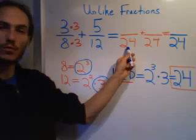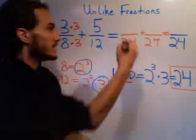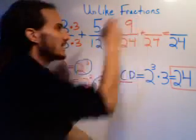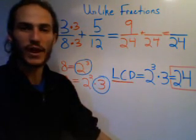8 times 3 indeed is 24, and 3 times 3 gives us 9 for our first numerator in our new equivalent fraction.